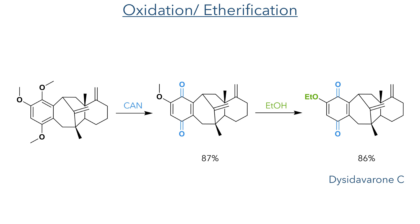Overall, this is a highly modular synthetic scheme to these two related families of compounds. This divergent strategy can produce the Dissi-Fraglones in just 8 steps and Dissi-Darverone in 6 steps, and could easily be modified to synthesise other members of these families, and will no doubt be used to great effect to explore the biological activities of these novel compounds.